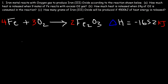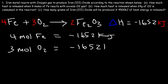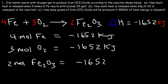You need to understand the relationship between the coefficient and the enthalpy value. For example, if 4 moles of iron metal reacts, negative 1652 kilojoules of heat energy will be released. If 3 moles of oxygen gas is consumed, the same amount of heat energy will be released. And if 2 moles of iron(III) oxide is produced, the same amount of heat energy will be released.